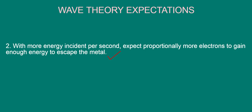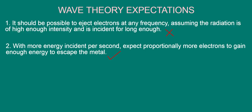However, wave theory offers no explanation for the existence of a threshold frequency, mentioned in observation 1. According to wave theory, it ought to be possible to eject electrons at any frequency, assuming that the radiation is of high enough intensity and is incident for long enough. Basically, it was thought that if you shone any light for long enough, eventually electrons would gain enough energy to escape.